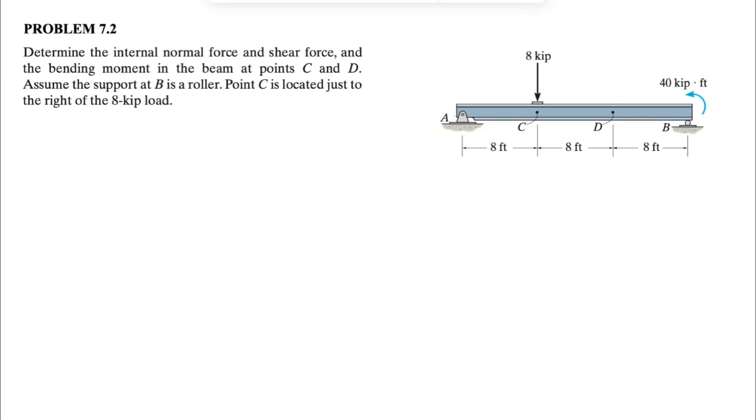Alright guys, we're going to be solving question 2 from chapter 7 of Hibbeler's textbook in Engineering Mechanics. We need to determine the internal force, including normal force and shear force, and the bending moment in the beam at points C and D. We can assume that the support at B is a roller, and point C is located just to the right of the 8 kip load.